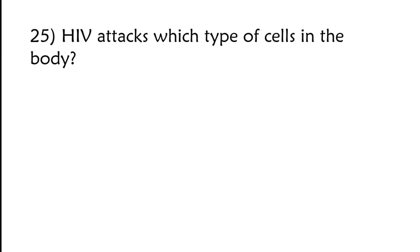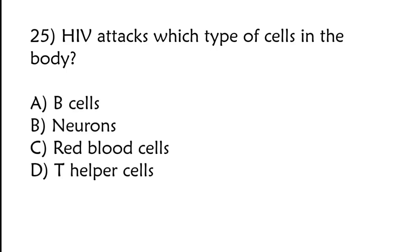HIV attacks which type of cells in the body? B cells, neurons, red blood cells, T helper cells? Correct answer is option D, T helper cells.